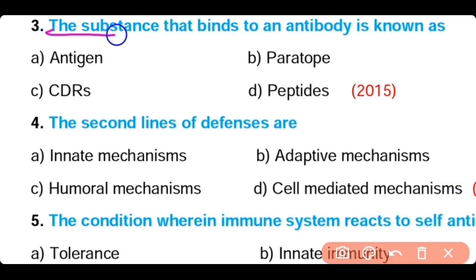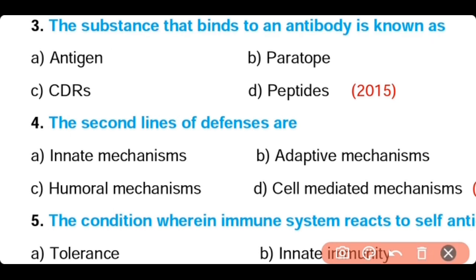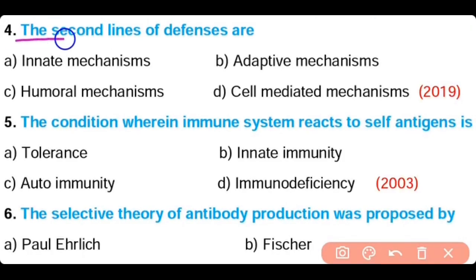Question number 3. The substance that binds to an antibody is known as: antigen, paratope, CDRs, or peptides. The correct answer is Option A. Antigen is a substance that can bind to an antibody.